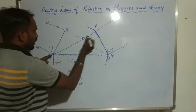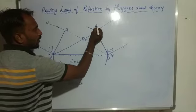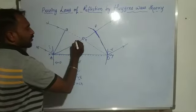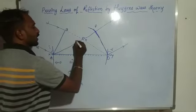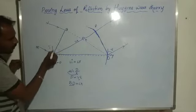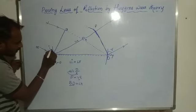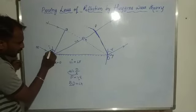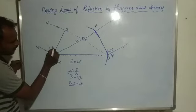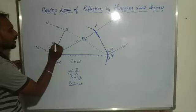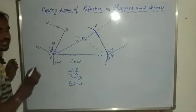The time taken for the reflected ray to reach point F we consider as T, and the speed of light is C. So the distance AF is also Ct, and the distance BD is also Ct. Since the plane wavefront and the incident ray are perpendicular to each other, the angle between them is 90. With angle I, the remaining angle in the triangle we consider as 90 minus I. Similarly, for the reflected ray, the angle between the normal and the surface is 90, so the remaining angle is 90 minus R.